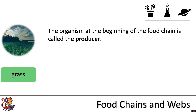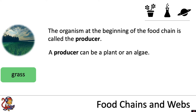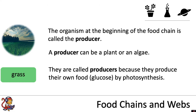The organism at the beginning of the food chain is called the producer. A producer can be a plant or an algae, and they are called producers because they produce their own food, which is glucose, by photosynthesis.